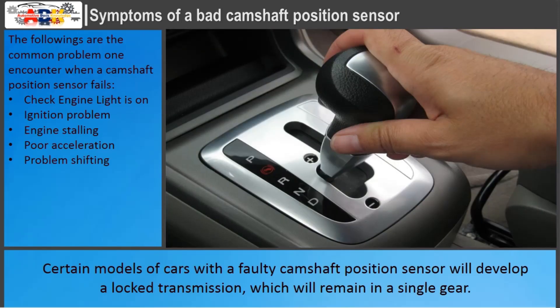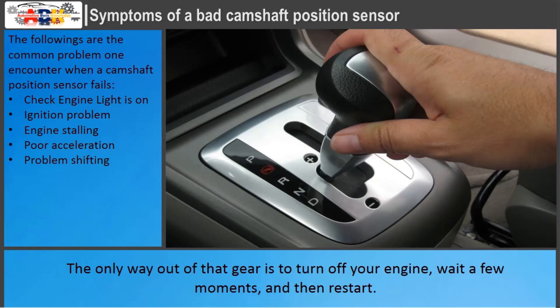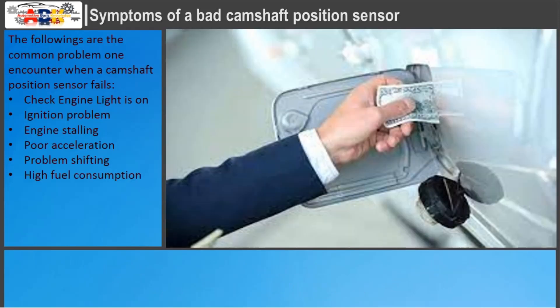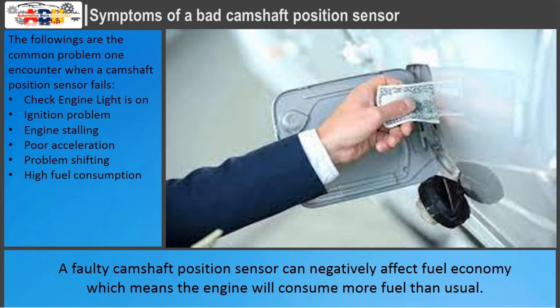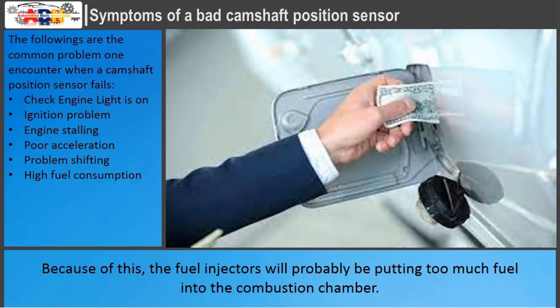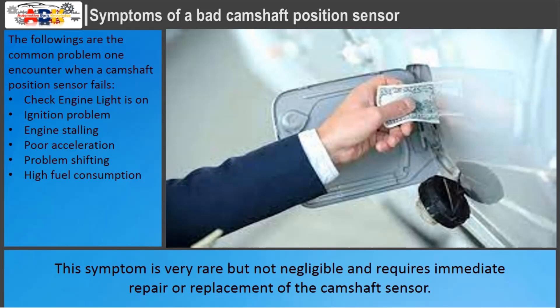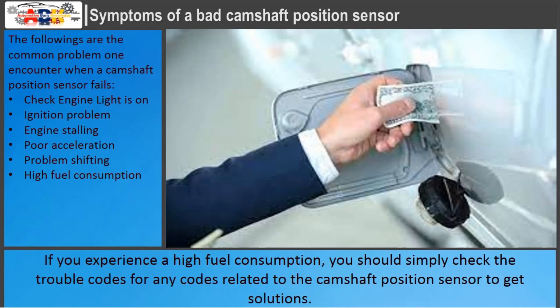Certain models of cars with a faulty camshaft position sensor will develop a locked transmission, which will remain in a single gear. The only way out of that gear is to turn off your engine, wait a few moments, and then restart. A faulty camshaft position sensor can also negatively affect fuel economy, meaning the engine will consume more fuel than usual, as the fuel injectors will probably be putting too much fuel into the combustion chamber. This symptom is very rare but not negligible and requires immediate repair or replacement of the camshaft sensor. If you experience high fuel consumption, check the trouble codes for any codes related to the camshaft position sensor.